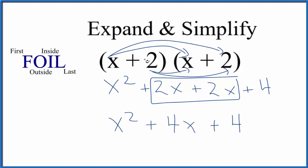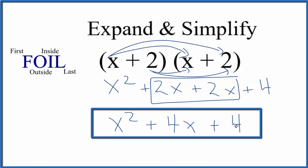So when we expand and simplify x plus 2 squared, or x plus 2 times x plus 2, we end up with x squared plus 4x plus 4.